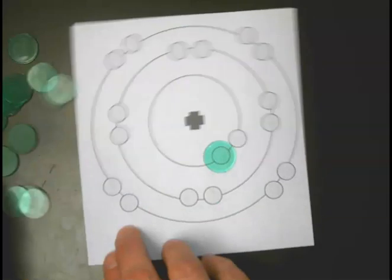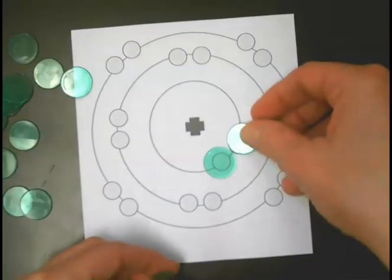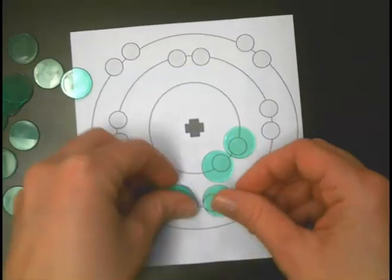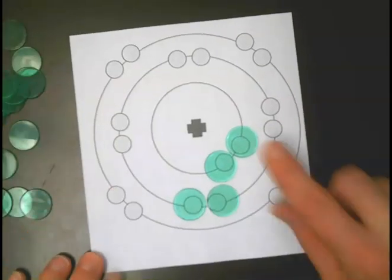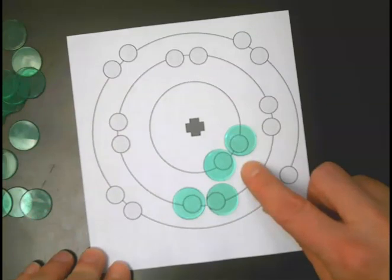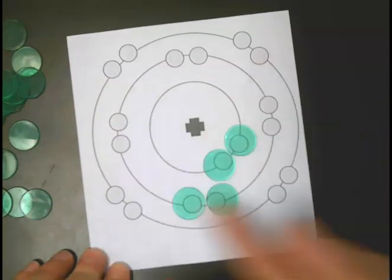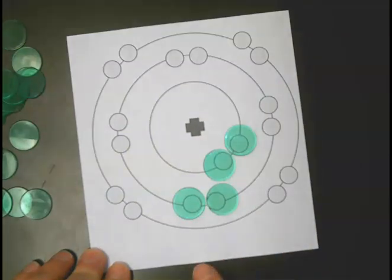If we had something that had more electrons, let's say something like this with four electrons. Our first two went on the first ring because that's closest to the nucleus, and then our next two went on the second ring. Our biggest ring that has electrons on it is this one here, so these two electrons are valence electrons.